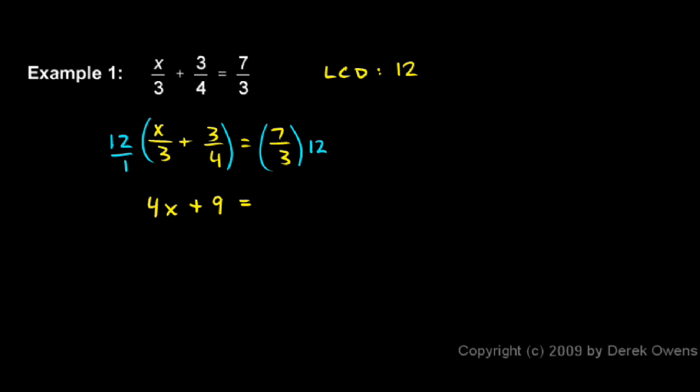Now on the right, I have 7/3 times 12. Remember, this 12 is also 12/1, so this 12 is up top and the 3 is down below. Those reduce to a 4. You should be able to see that you have the 7 times the 4, which gives you a 28.